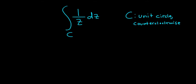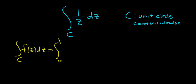Hey everyone, in this problem we have to integrate 1 over z with respect to z along the unit circle in the counterclockwise direction. The formula for an integral like this is as follows: if you have the integral of f of z with respect to z along a contour c, this is equal to the definite integral from a to b of f of w of t times the derivative of w of t, dt.